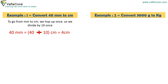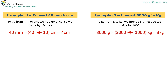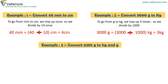Example 2. Convert 3000 grams to kilograms. To go from gram to kg, we hop up 3 times, so we divide by 1000. 3000 grams is equal to 3000 ÷ 1000 kg, which equals 3 kg.